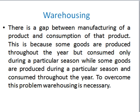Next is warehousing. There is a gap between the manufacturing of a product and its consumption, because some goods are manufactured throughout the year but consumed during a particular season. For example, cotton clothes are produced throughout the year but consumed only in summer, and woolen clothes are produced throughout the year but consumed only during winter. The same applies to water coolers. So there is a need to keep them safely, and warehousing is required.